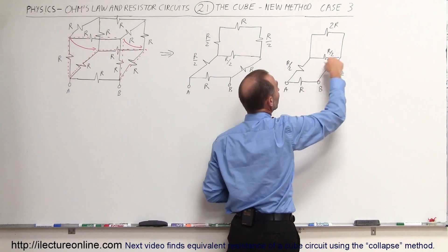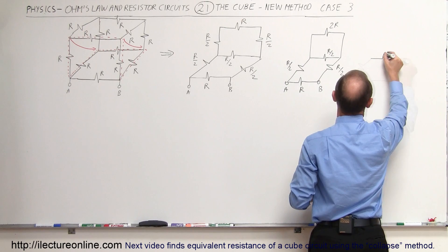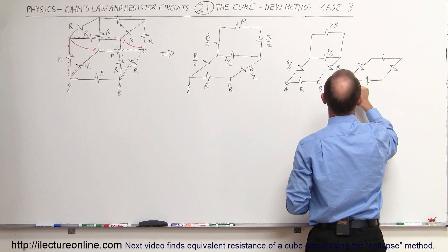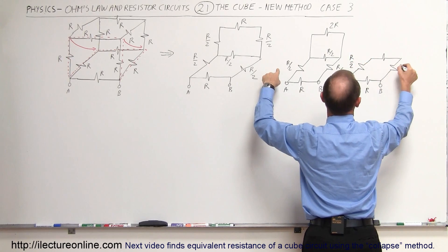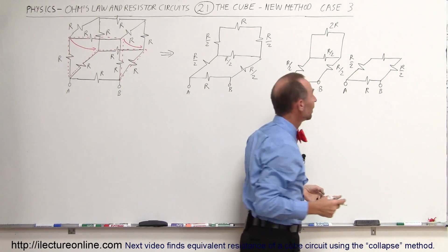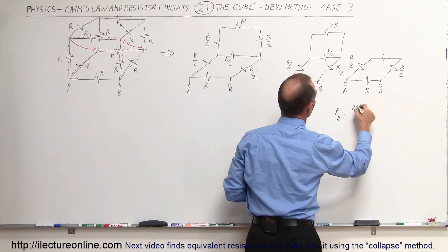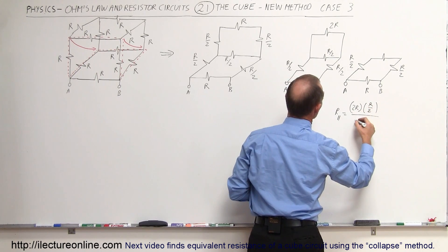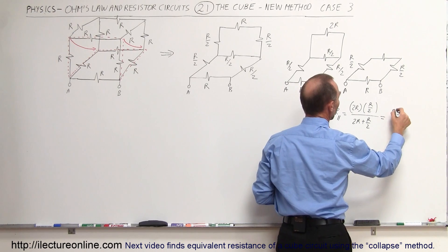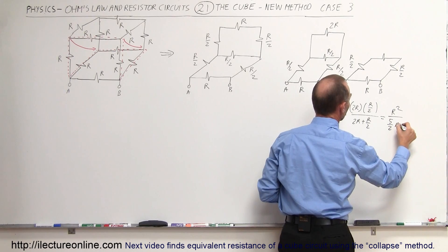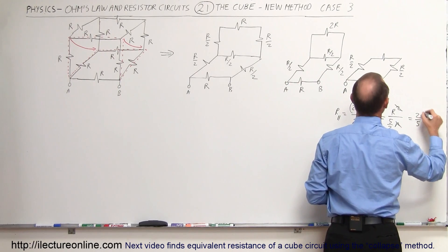Next, we can combine the 2R and R/2 resistors since they are in parallel, using the product-over-sum method. R parallel equals (2R × R/2) divided by (2R + R/2). The product 2R × R/2 equals R², and the denominator is 2R + R/2 = 5R/2. Dividing R² by 5R/2 — dividing by a fraction is the same as multiplying by its inverse — gives us 2/5 R as the equivalent parallel resistance.